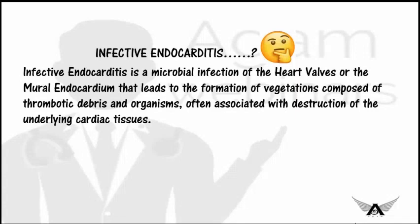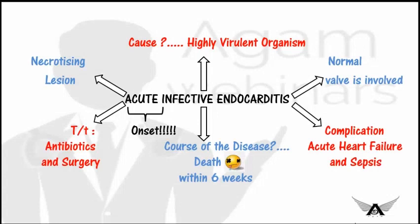Infective endocarditis is typically divided into acute and sub-acute types. Acute infective endocarditis has an acute onset and is caused by highly virulent organisms such as Staphylococcus aureus and Streptococcus pyogenes. The infection progresses to a rapidly destroying, necrotizing and ulcerative lesion, and the patient dies within 6 weeks if treatment is not provided. Complications include acute heart failure and overwhelming sepsis.